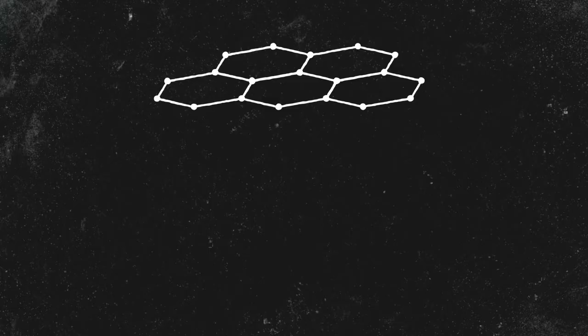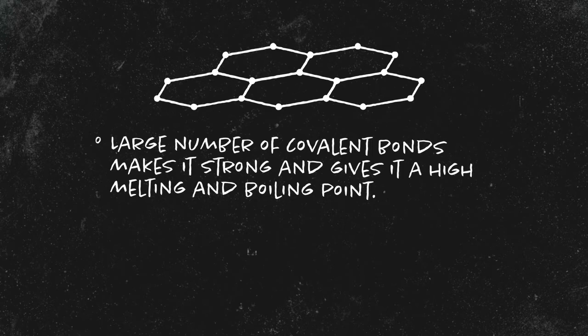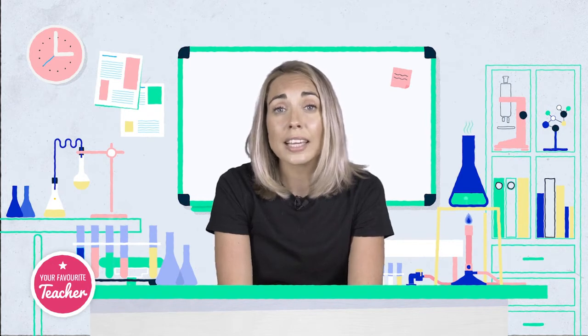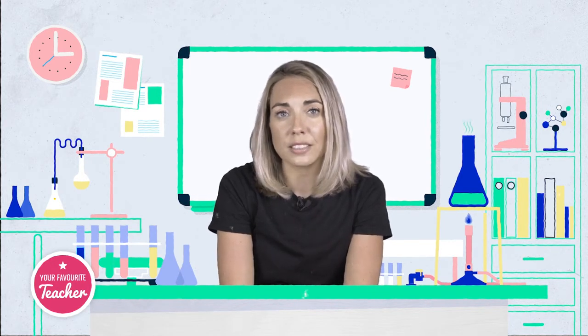Graphene is one atom thick, but the high number of covalent bonds makes it very strong. These properties make graphene very useful in electronics, as it can replace silicon in manufacturing and can be used to make composites.